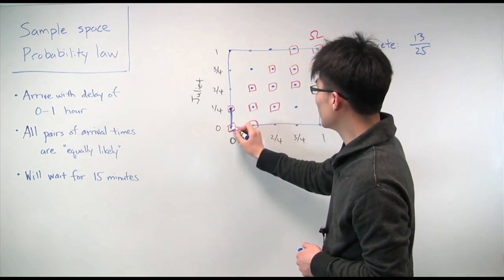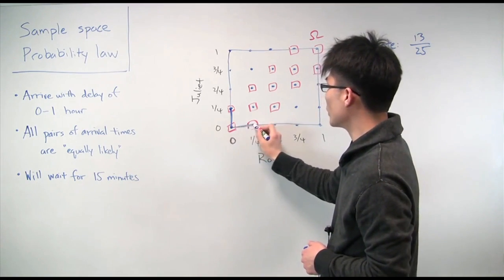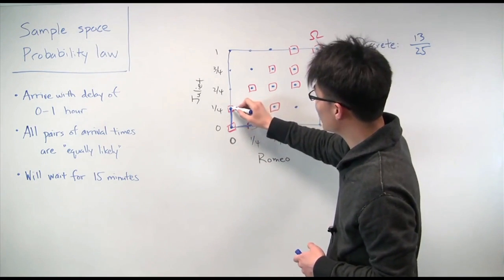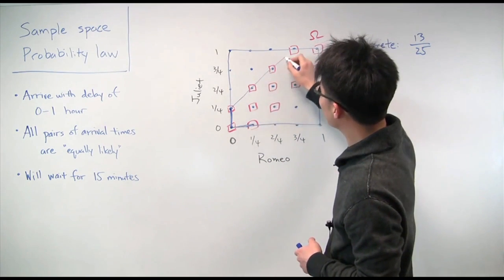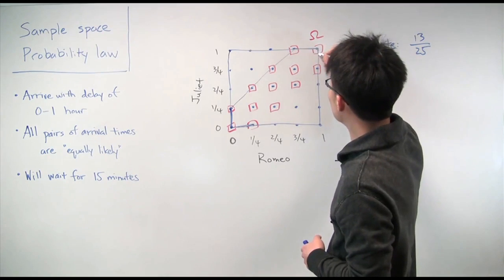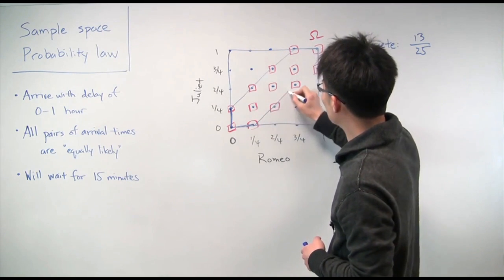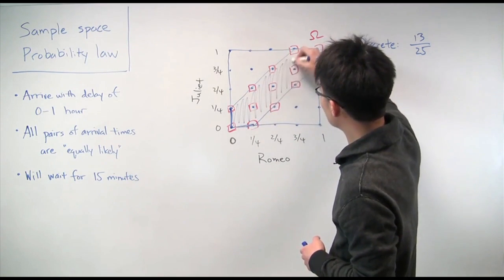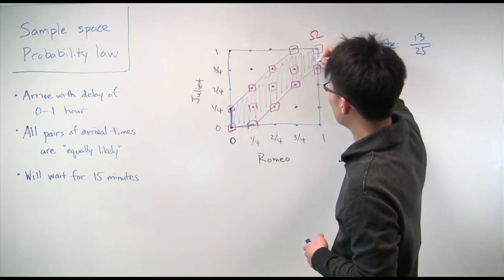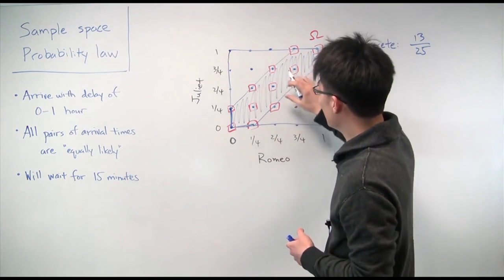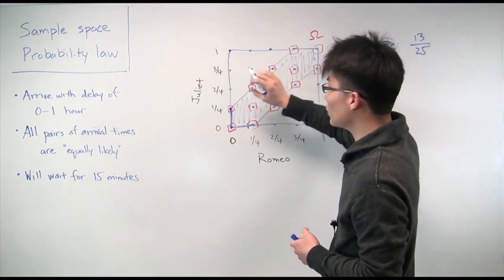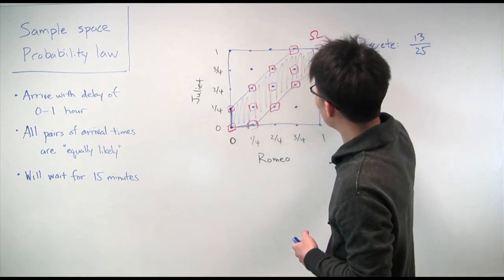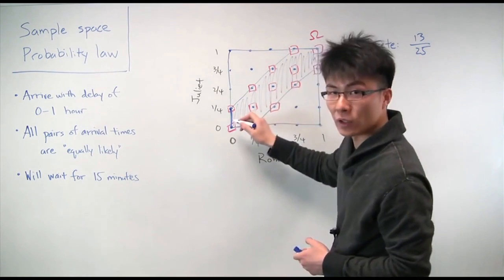So this segment here is part of the event of interest. And similarly, this segment here is also part of the event. And if you take this exercise and extend it, you can actually verify that the event of interest is this kind of strip shape in the middle of the square. Which, if you think about it, makes sense because you want the arrival times between Romeo and Juliet to be close to each other. So you would expect it to be somewhere close to a diagonal in this square.